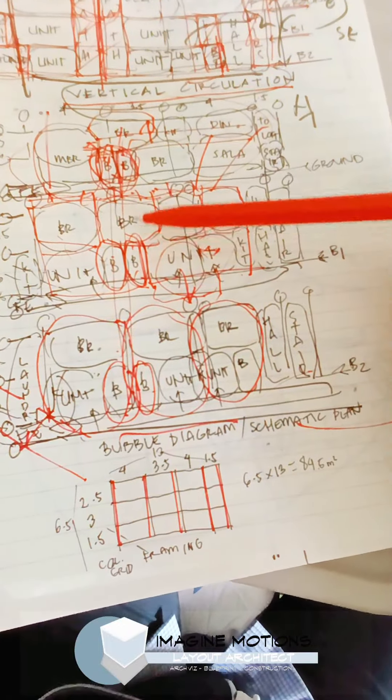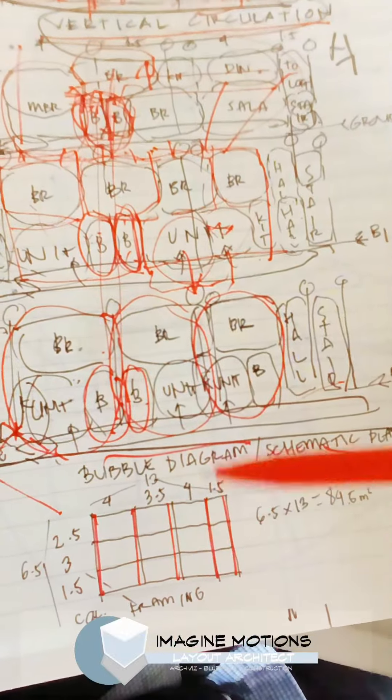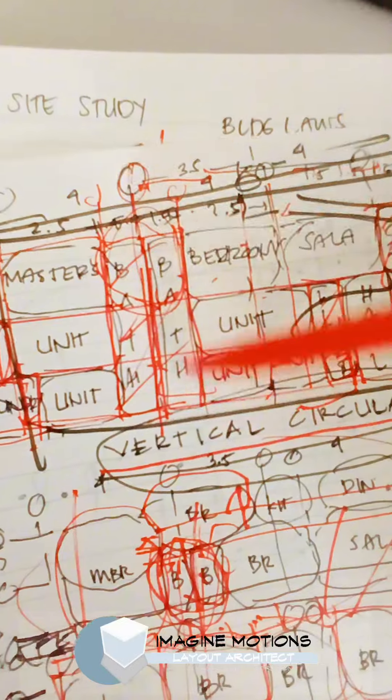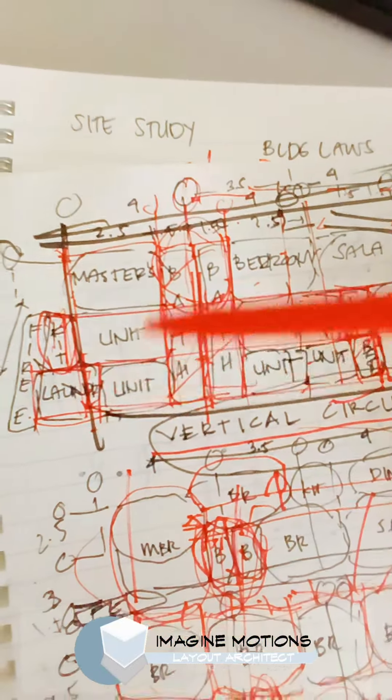In order to visualize it better, make it into a section that looks like this. Bathrooms are stacked, wet areas are stacked, so we are saving on cost.